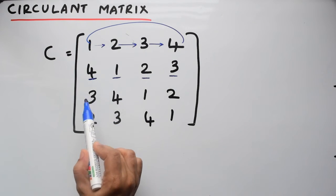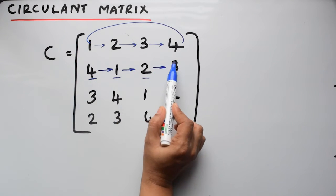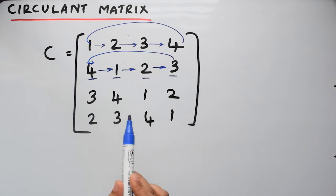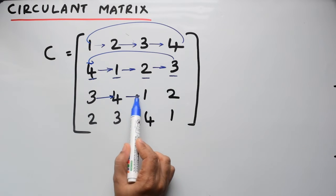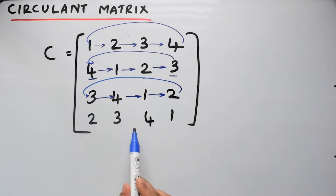Now again, to get this third row, the second row should be circulantly shifted to the right by one position and you get this third row. And to get the fourth row, this third row has to be circulantly shifted to the right to get the fourth row.